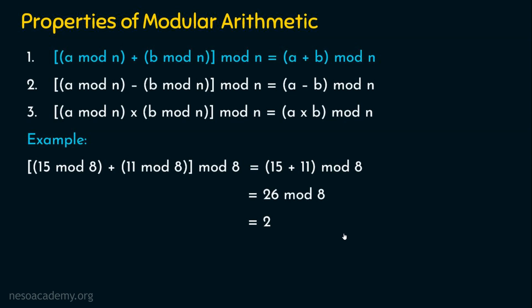There is one more approach — it's very simple. 15 mod 8: 15 divided by 8 gives remainder 7. 11 mod 8: gives remainder 3. So we have 7 + 3 = 10, then 10 mod 8. 10 divided by 8 gives the same remainder 2. Please ensure you follow the basics of mathematics correctly — any approach you follow doesn't matter as long as you follow the correct principles. This is about the first property: addition.